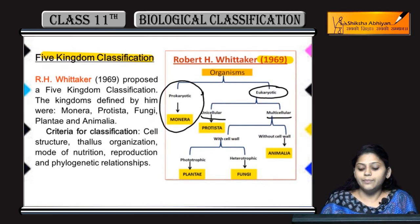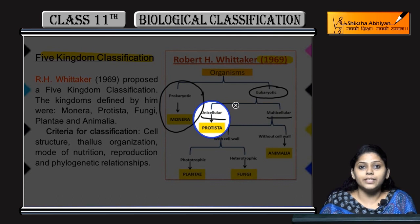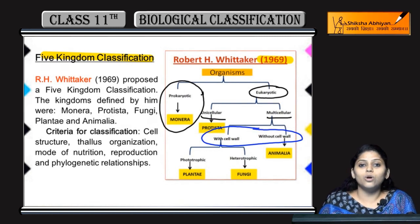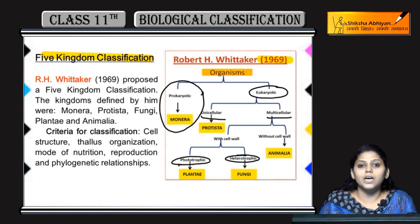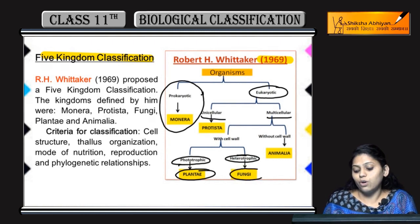Jo unicellular organisms the, unme aaye Protista — they were unicellular like monerans, but the difference is they are eukaryotes and organelles are present. Multicellular organisms ko further divide kiya — those having cell wall aur jinke paas cell wall nahin thi. Jo phototrophic the — sunlight ki help se apna khana synthesize karte hain — they are Plantae, i.e., plants. Aur heterotrophic, non-photosynthetic, but having cell wall — they are Fungi.